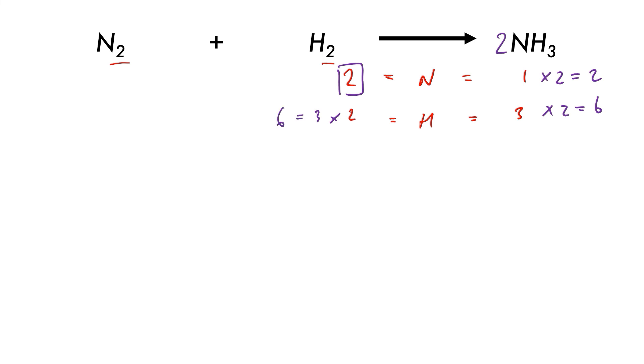Our overall balanced reaction equation will be one nitrogen plus three hydrogens gives us two ammonia molecules. And that's how we would balance this reaction equation.